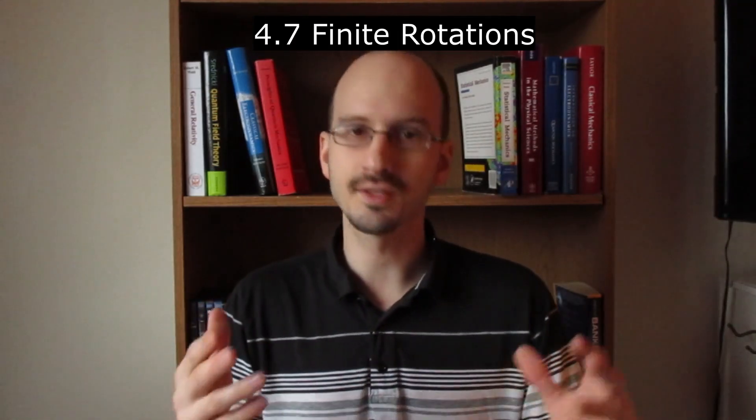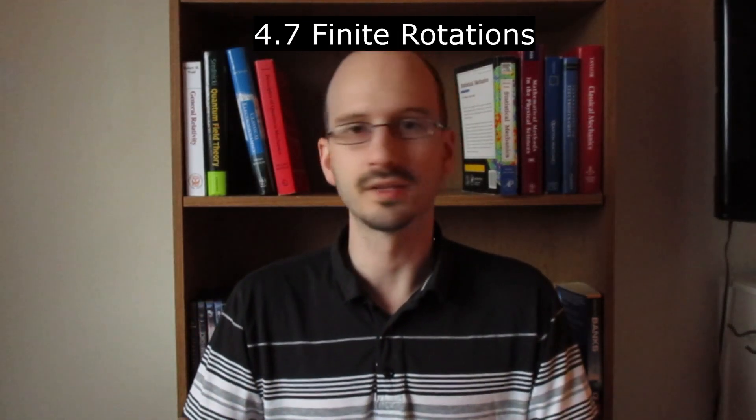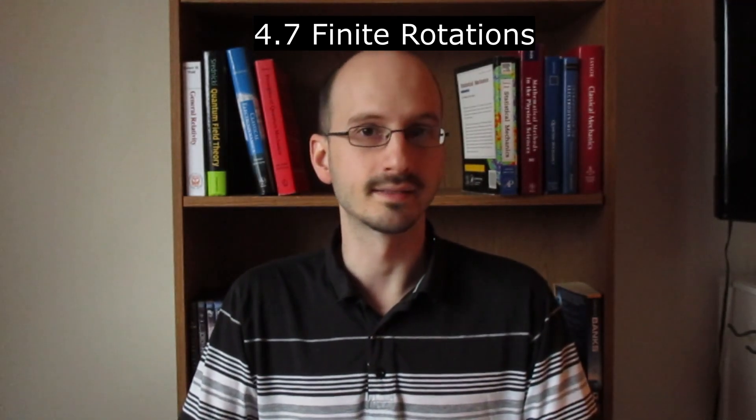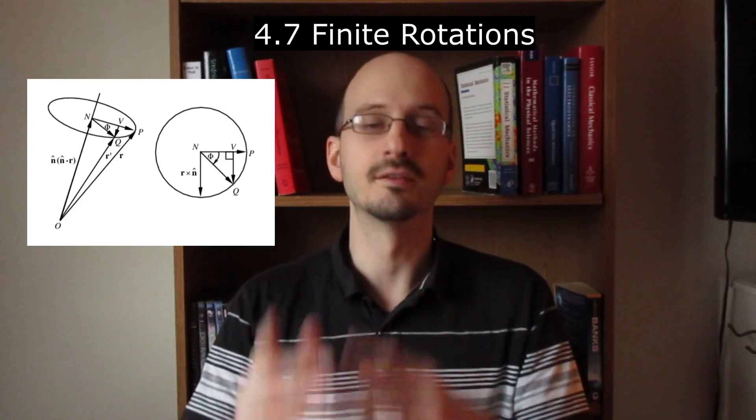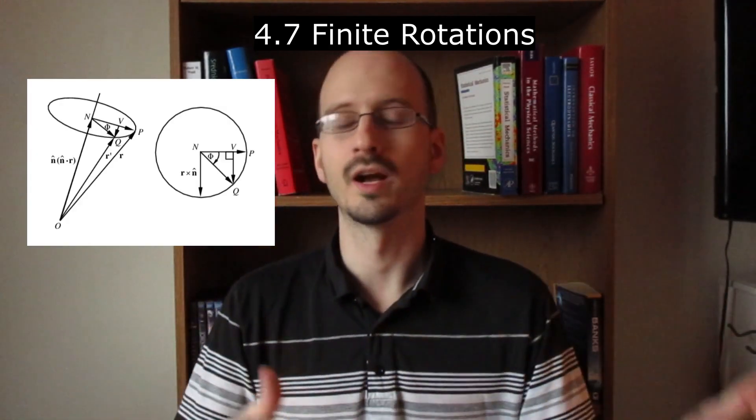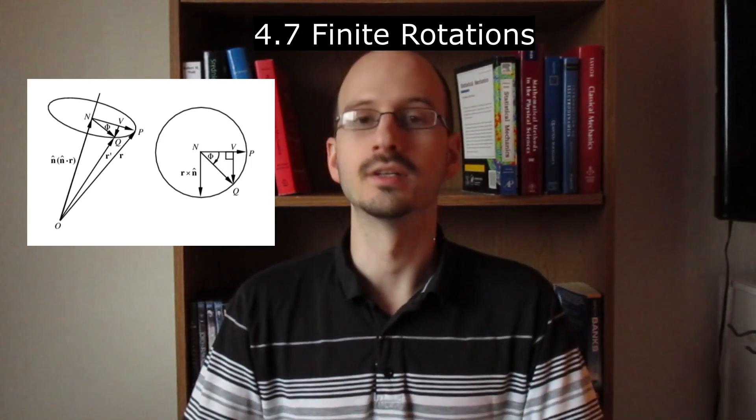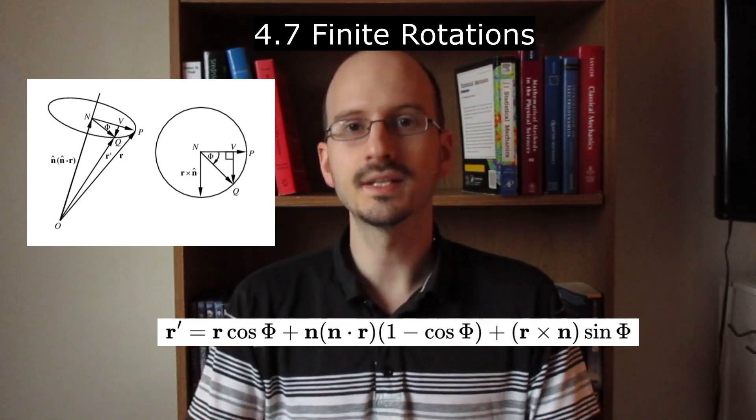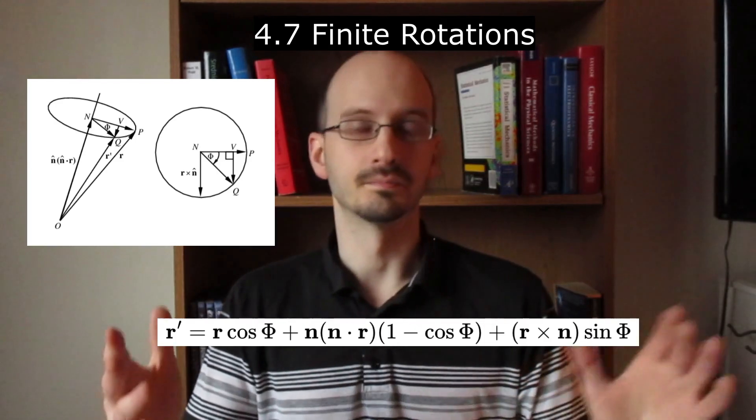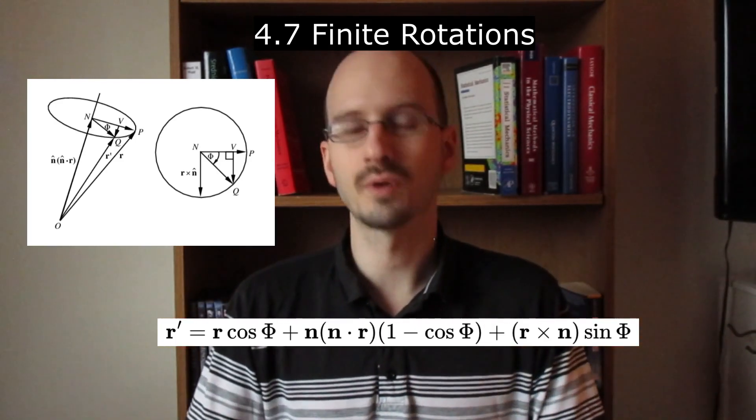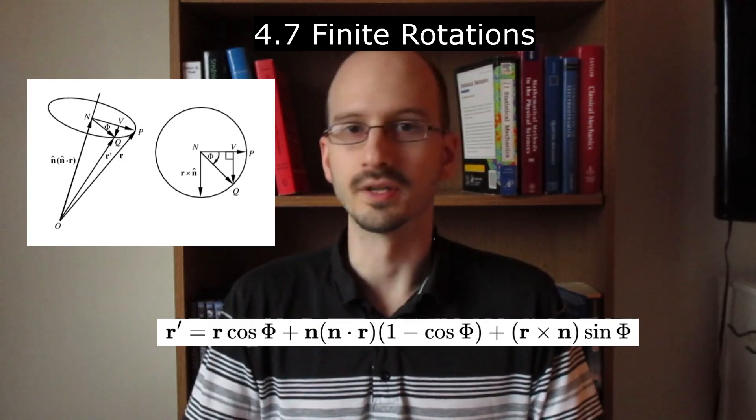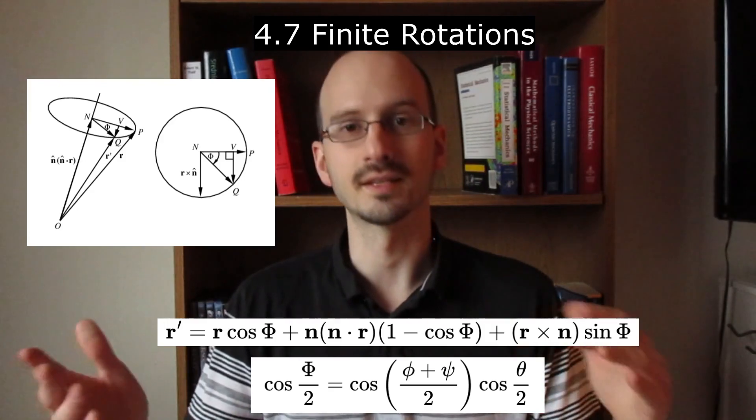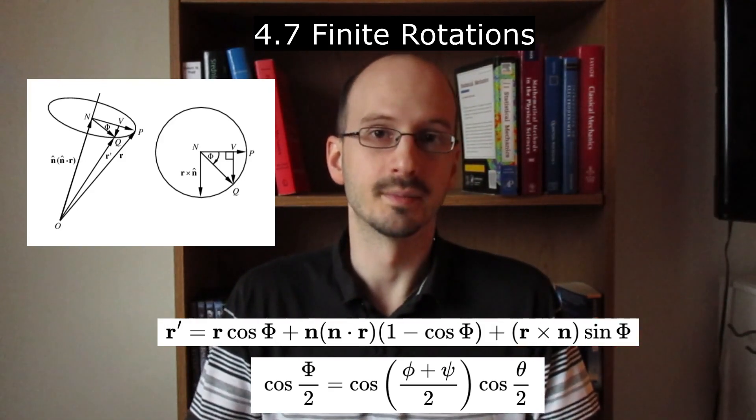Section 4.7 is finite rotations, in contrast with infinitesimal, not infinite, because infinite rotations doesn't make sense. This chapter describes a vector rotating about the previously described axis vector, which in this section is labeled n. It derives a formula for the rotation, which is this. Phi is the angle rotated about the axis, and there's a dot product and a cross product in there, which makes sense if you really think about it. This rotation angle can be expressed in terms of the Euler angles using this equation. I don't have too much more to say about this. It was a pretty mathy section.